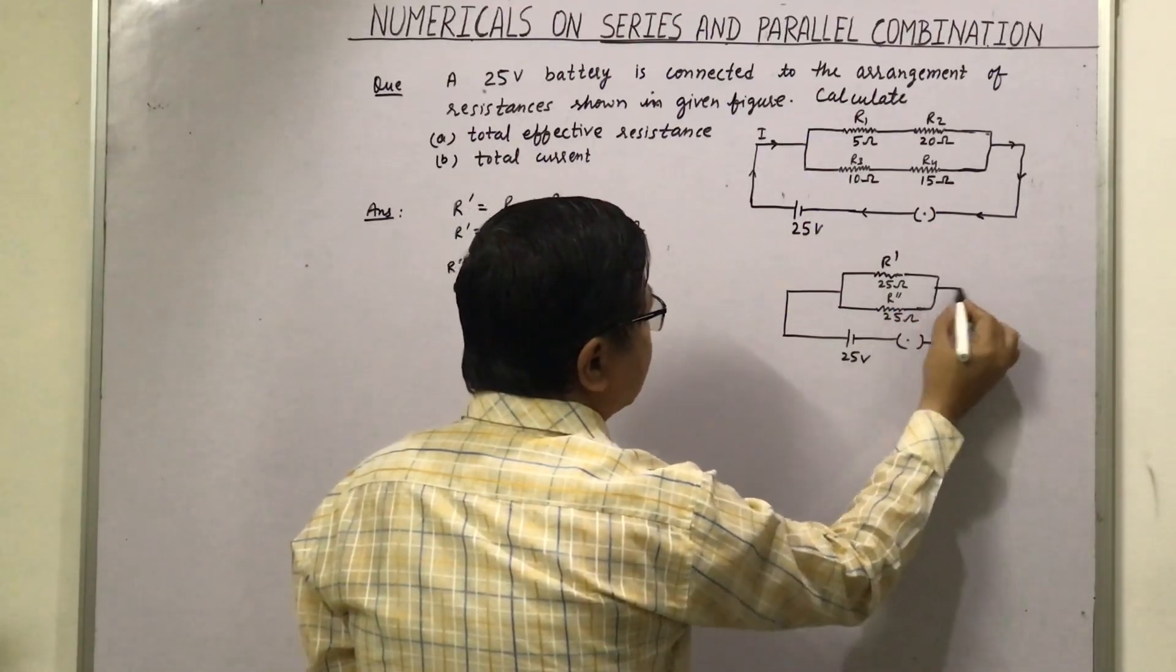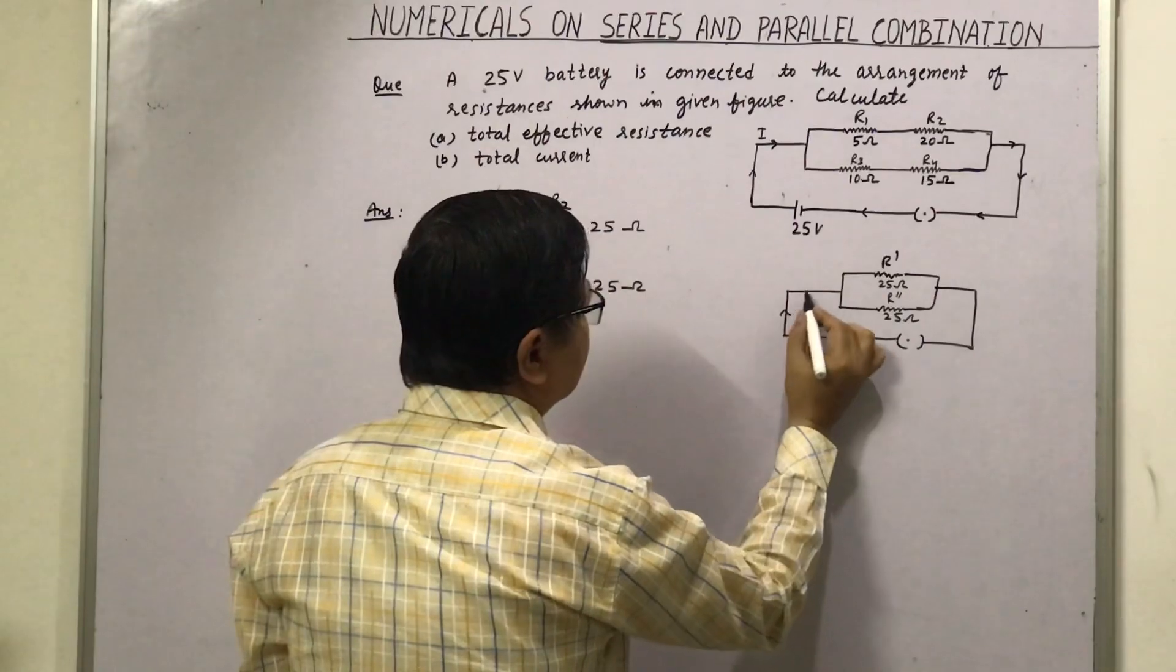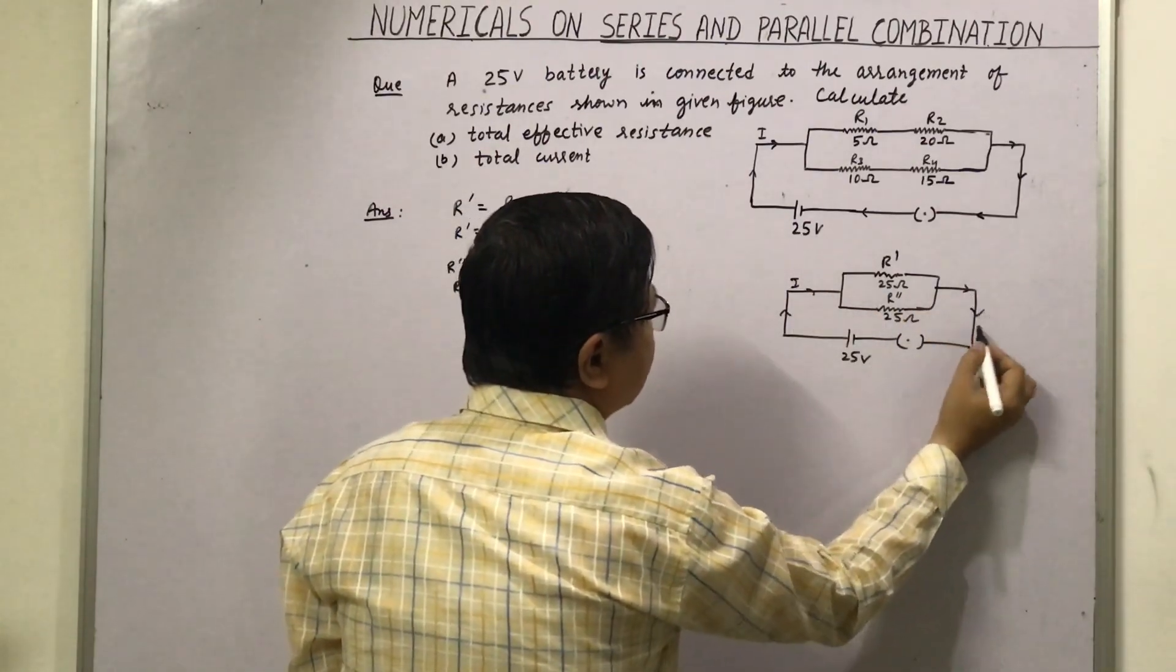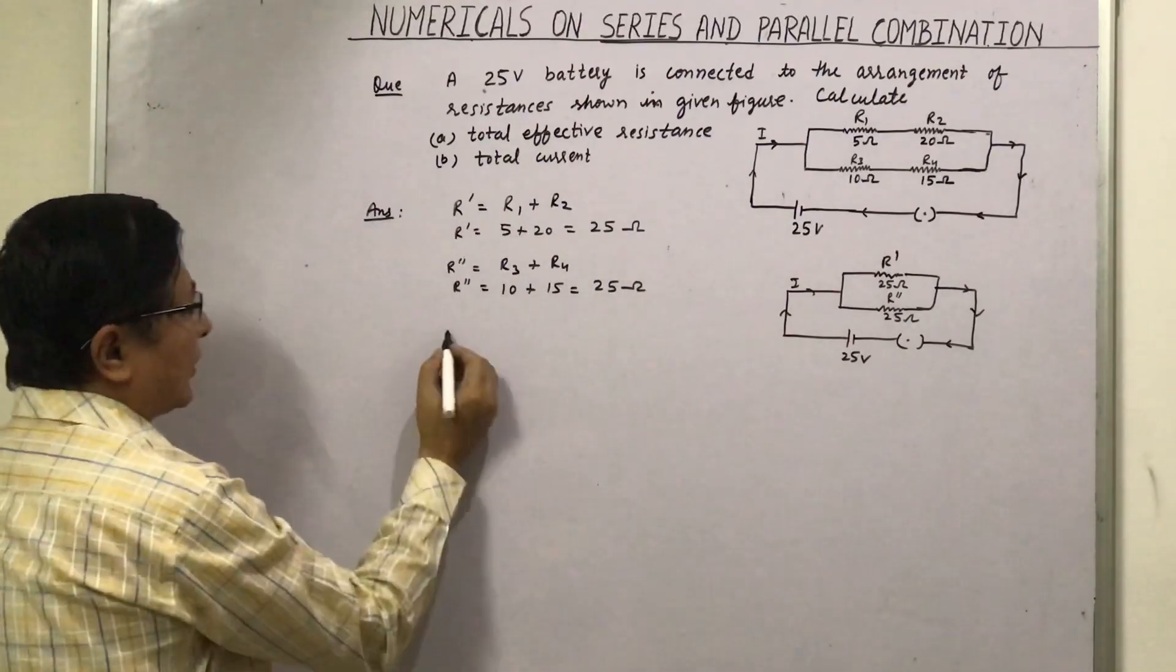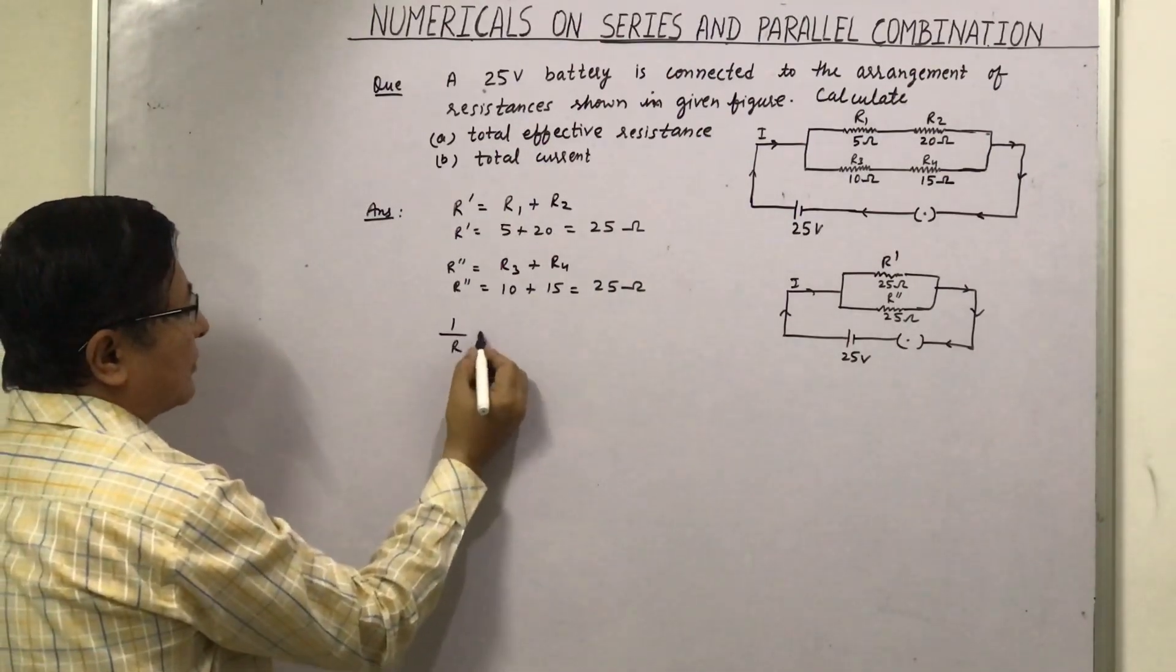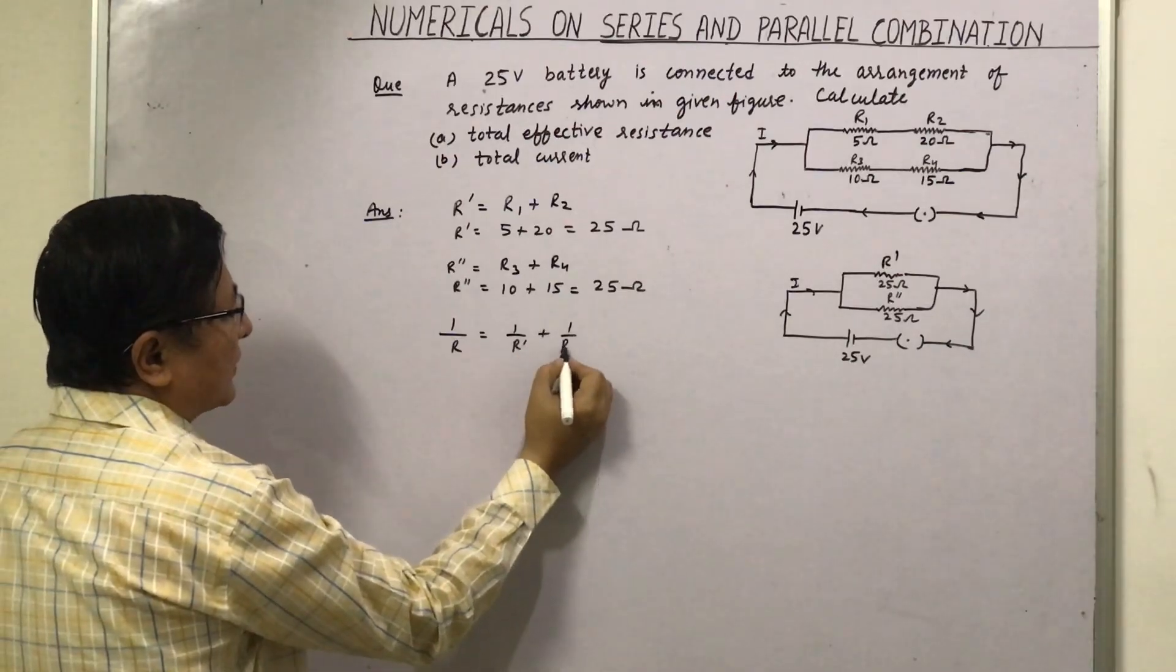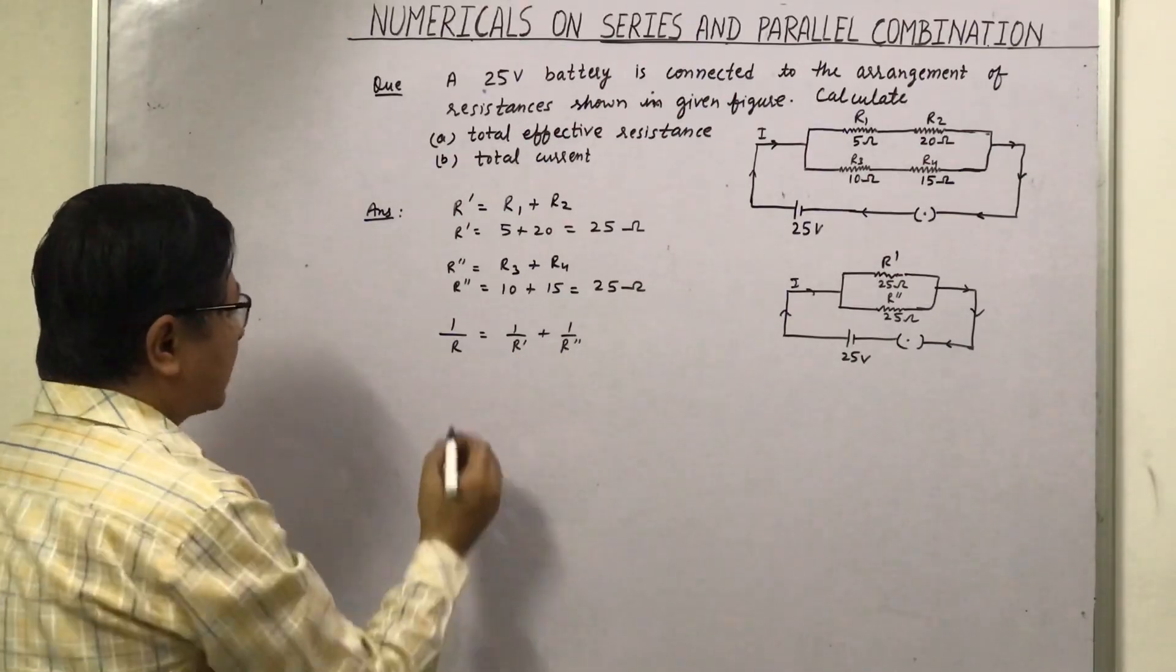And now you can see these two are connected in parallel. So we have to find what is the total effective resistance of the circuit. So 1 upon R will be equal to 1 upon R dash plus 1 upon R double dash. So now let us solve this.